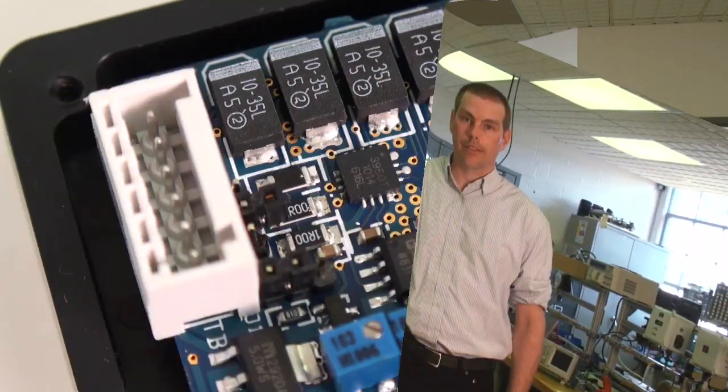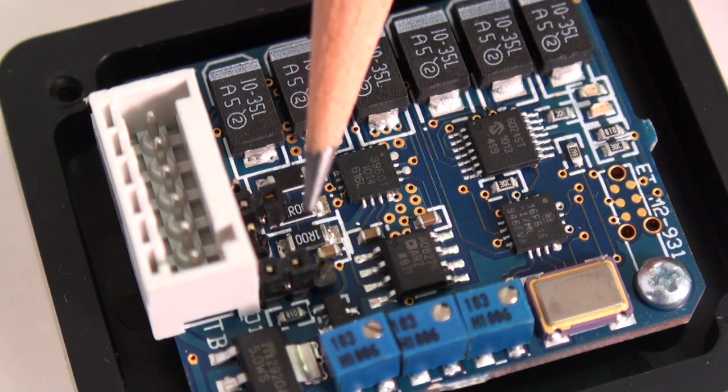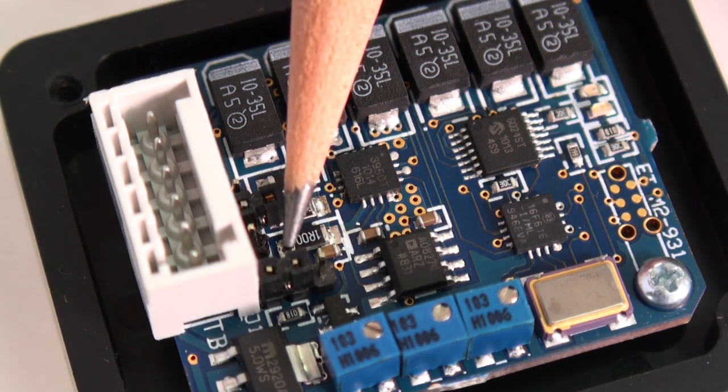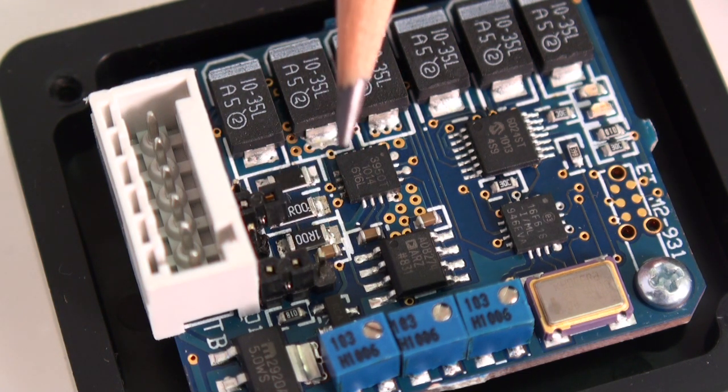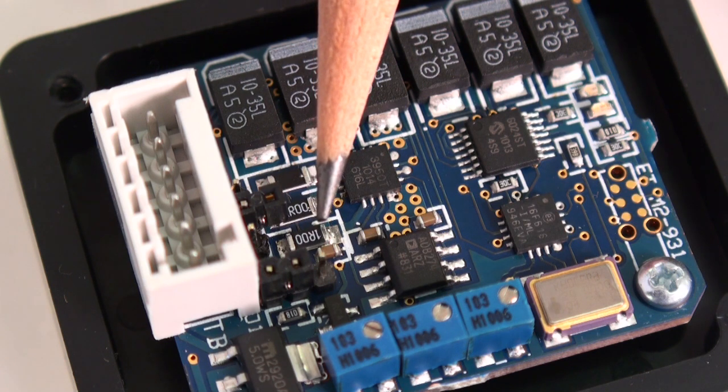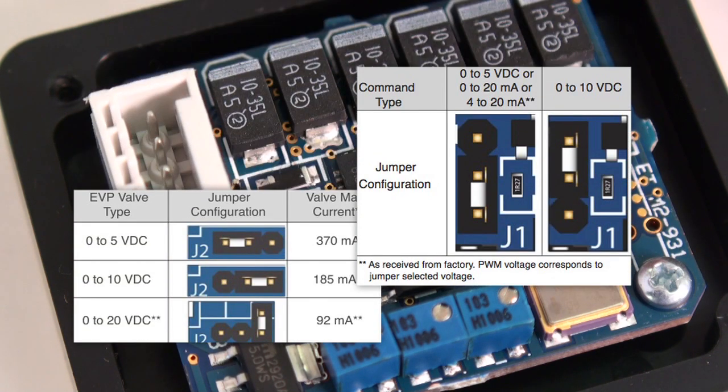And while we have the case open, let's look at the command jumper as well to see if the setting is correct for your needs. If you're using 0 to 5 volts, 0 to 20 milliamps, or 4 to 20 milliamps to control this driver, then the jumper setting for the input command signal is in the right spot from the factory. However, if you want to use 0 to 10 volts, you'll need to change that jumper. See the installation and operations manual for more information about the jumper positions.